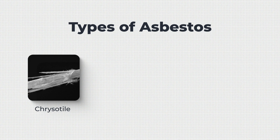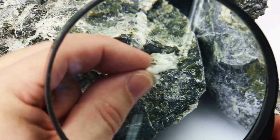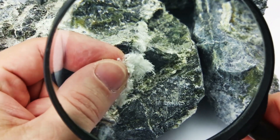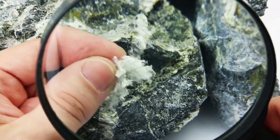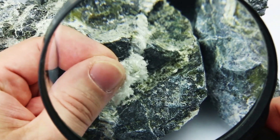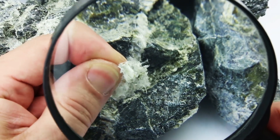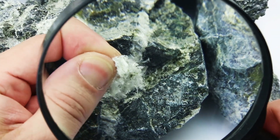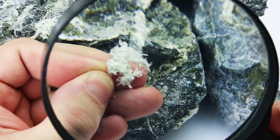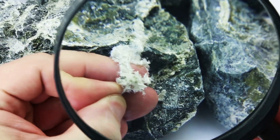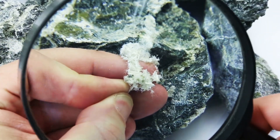Chrysotile is the most common form of asbestos and the most recognisable version. It consists of light-coloured wavy fibres, usually woven together and having the same consistency as a human nail. It was used in a wide variety of ways due to its strength.